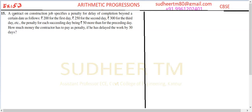Question 50 in exercise 5.3. A contractor on a construction job specifies a penalty for delay of completion beyond a certain date as follows: rupees 200 for the first day, 250 for the second, 300 for the third day, and so on, with the penalty for each succeeding day being rupees 50 more than the preceding day. How much money does the contractor have to pay as penalty if he has delayed the work by 30 days?